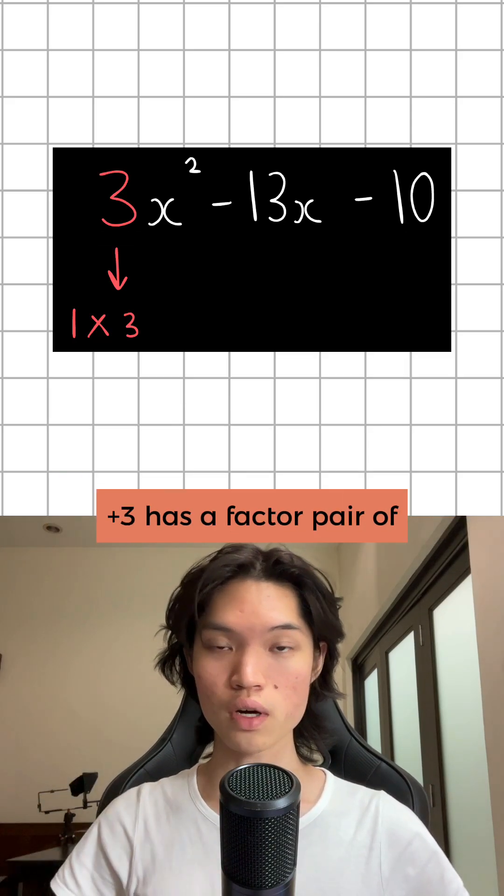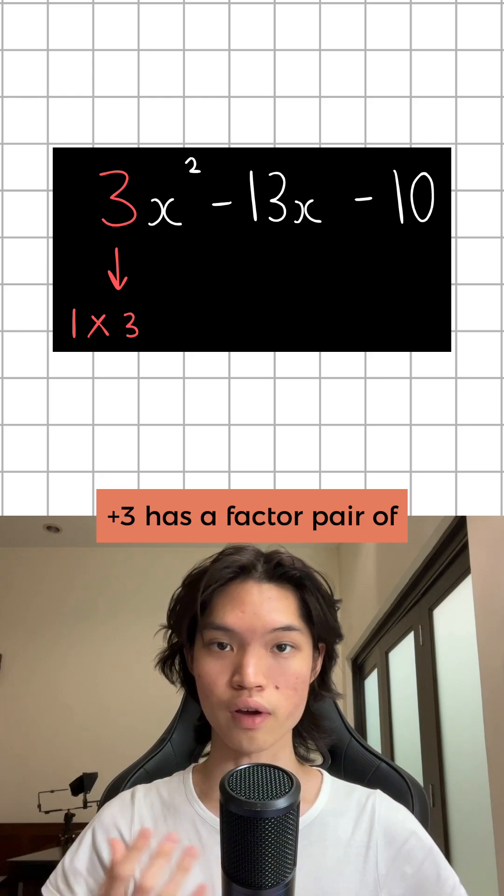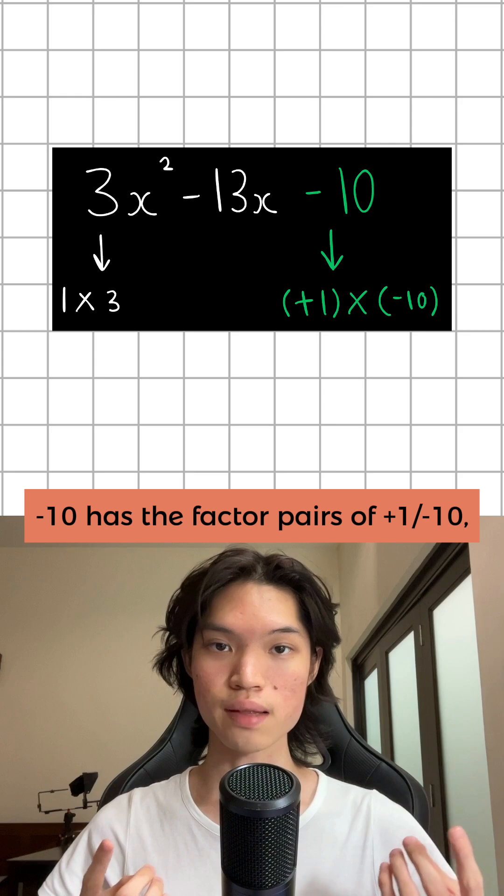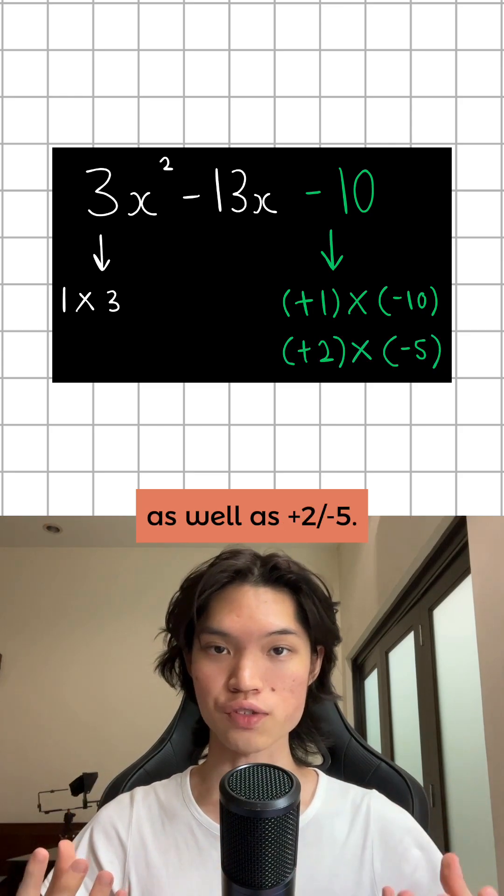For example, in this expression, positive 3 has a factor pair of 3 and 1. Negative 10 has the factor pairs of plus 1 minus 10 as well as plus 2 minus 5.